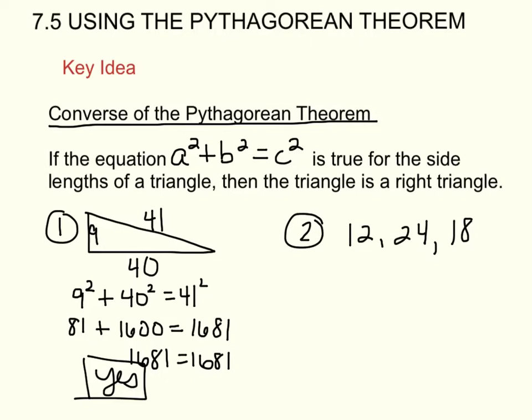So we start plugging it in. Now don't assume that this is a, this is b, and this is c. The longest side has to be c. 24 has to be c. The other two numbers, it does not matter. So we could do 12 squared plus 18 squared equals 24 squared.